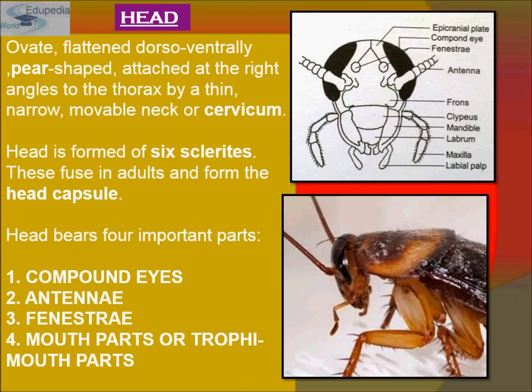The head bears four important parts. Remember, cockroaches do not have simple eyes — they have compound eyes. The four parts are: compound eyes, antennae, fenestriae (those circular spots), and chewing-type mouthparts.